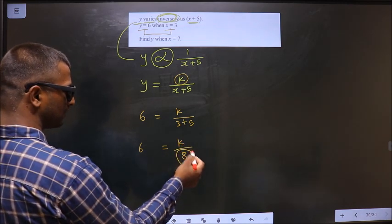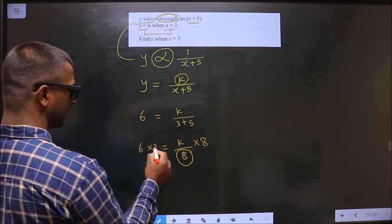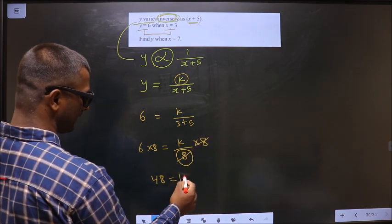To get k, I should remove this 8. To remove 8, multiply by 8 on both sides. 6 into 8 is 48. This cancels out, I get k.